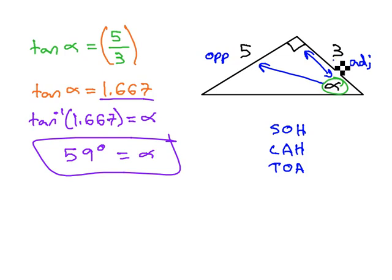If we know what sides we're talking about, we can identify the correct trig ratio. And to find an angle, we need to use an inverse trig ratio.